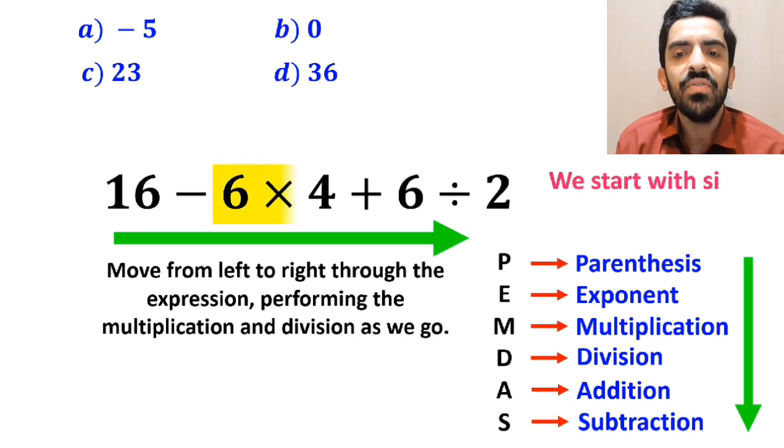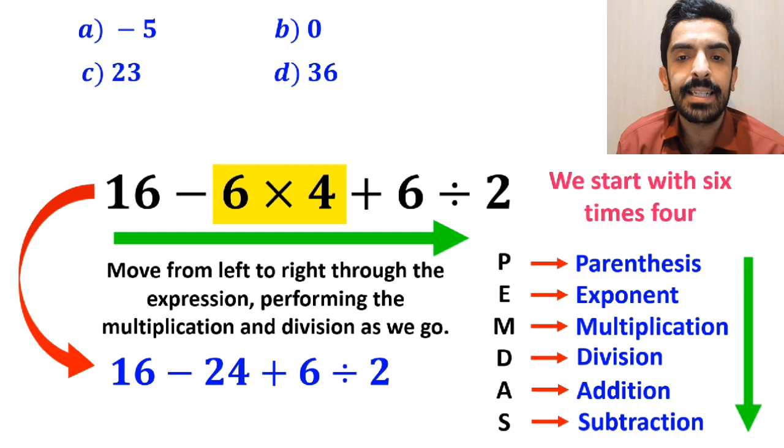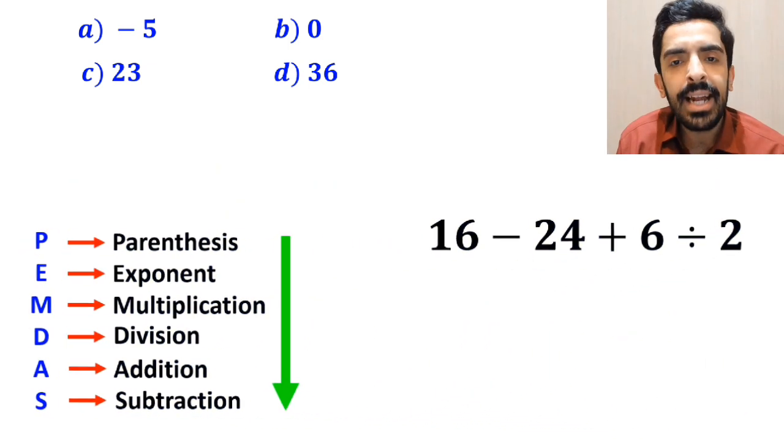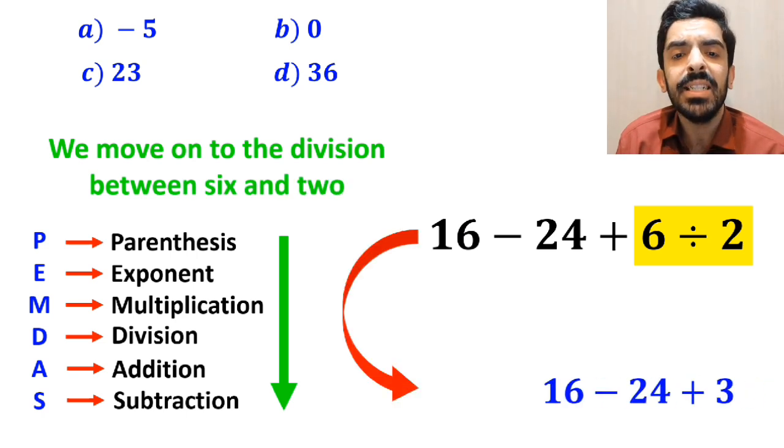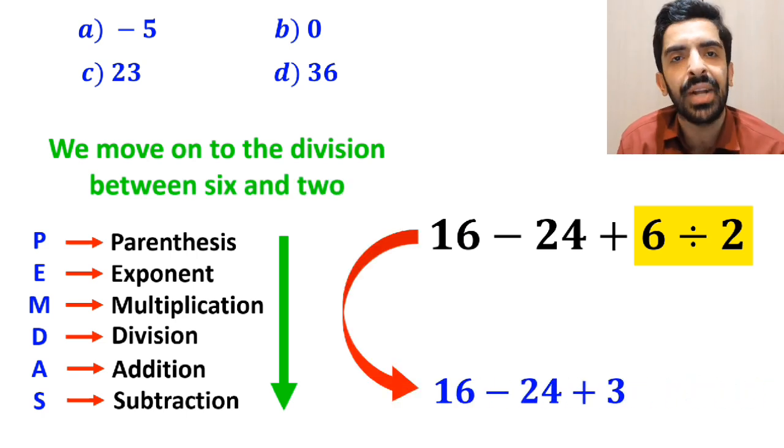So, first we start with 6 times 4, and write this expression as 16 minus 24 plus 6 divided by 2. In the next step, we move on to the division between 6 and 2, and replace this expression with 16 minus 24 plus 3.